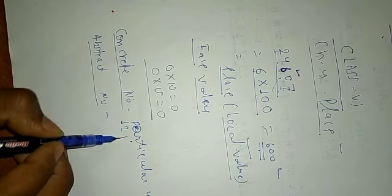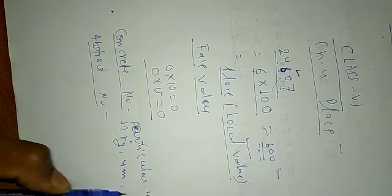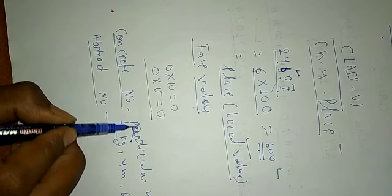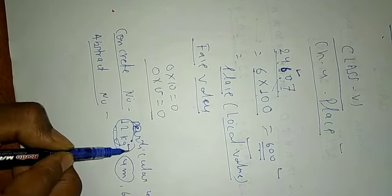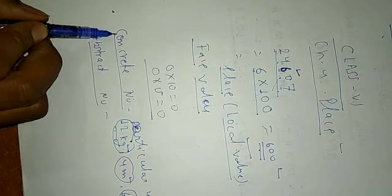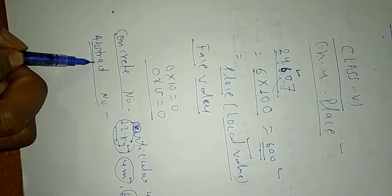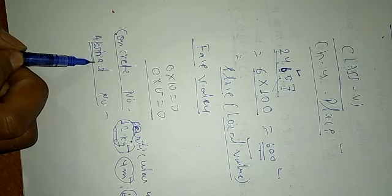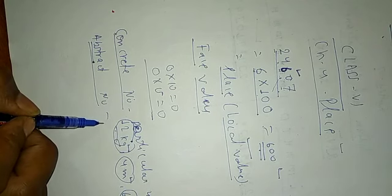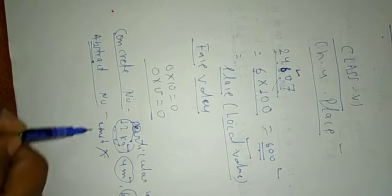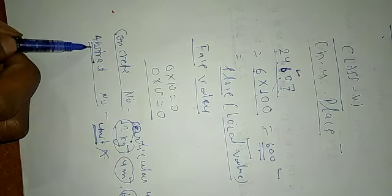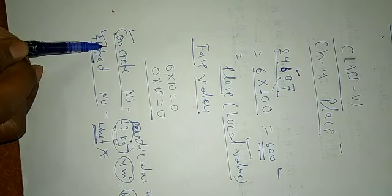For example, 12 kilograms, 4 meters, 6 kilometers — these numbers refer to a particular unit, so they are called concrete numbers. An abstract number is a number which does not refer to any particular unit. Such types of numbers are called abstract numbers.